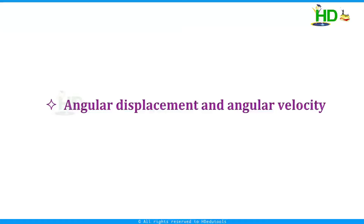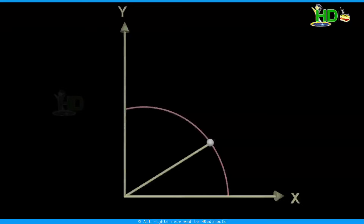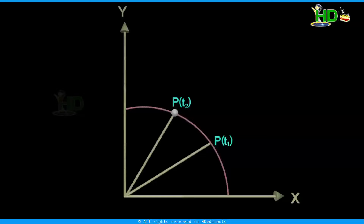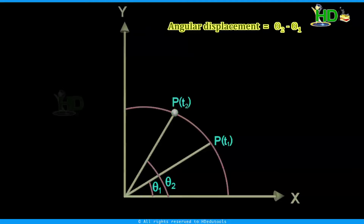Consider particle P moving along a circular path at two instants of time t1 and t2. Let the positions be theta1 and theta2 respectively, as seen in the figure. The angles theta1 and theta2 give the position of the radius vector at t1 and t2 respectively. Therefore R is also called a position vector. The particle undergoes an angular displacement of theta2 minus theta1. This is the angular displacement during the time interval — that is, the angle through which the radius vector rotates in a given time. The angular displacement is theta2 minus theta1.